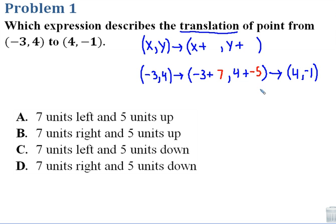So as far as my translation rule goes, I could say we have x plus 7 and y minus 5, or y plus negative 5. And the physical effect that's going to have on the graph as far as the left, right, up, down part. Adding to the x is going to move us to the right. Subtracting from the y will move us down. So we'd say that's going to be 7 units right and 5 units down. Option D here.